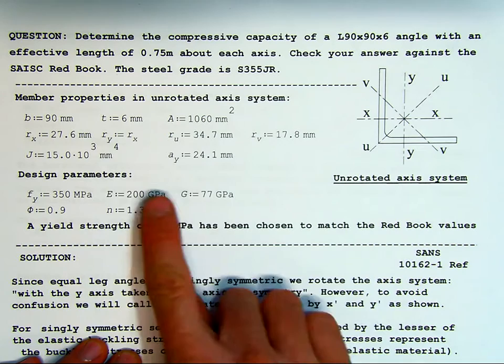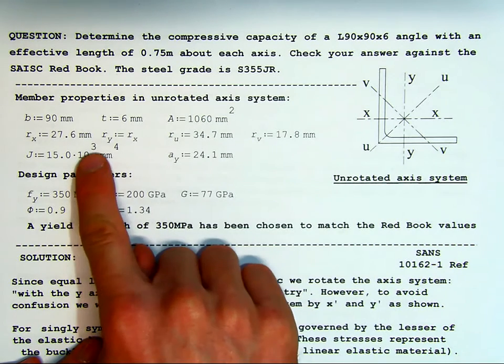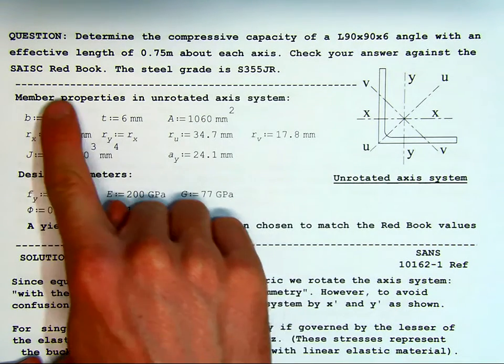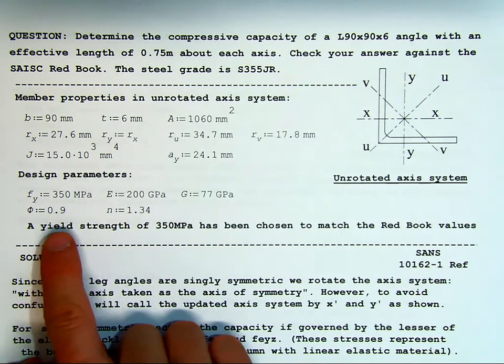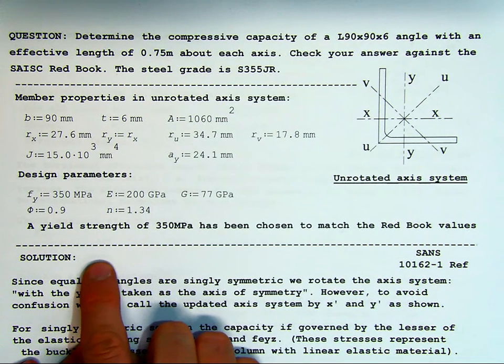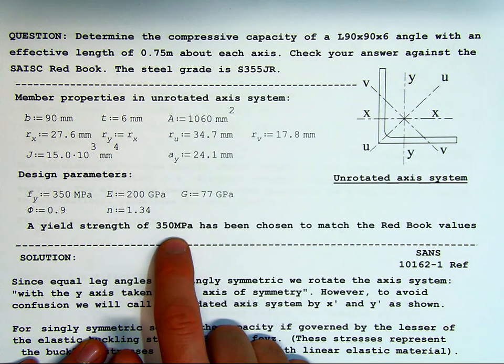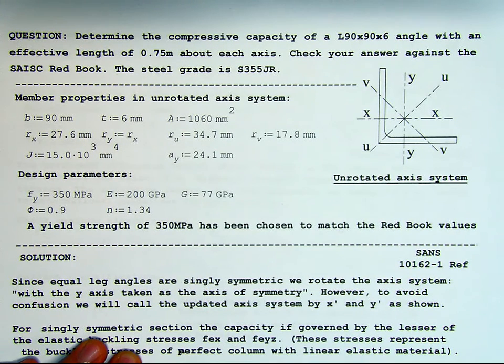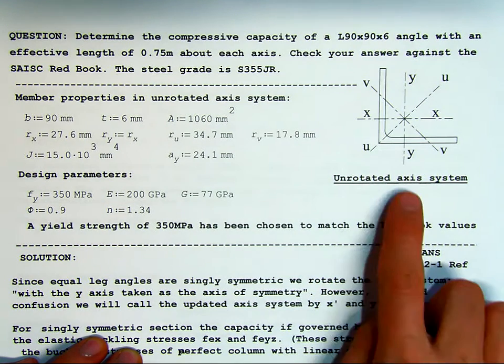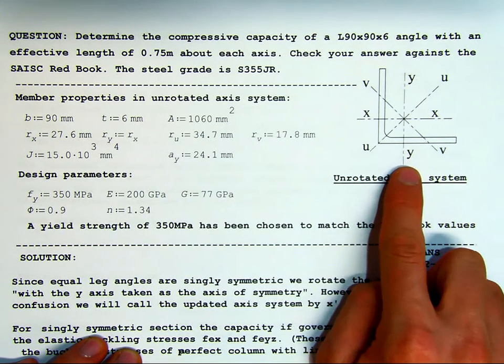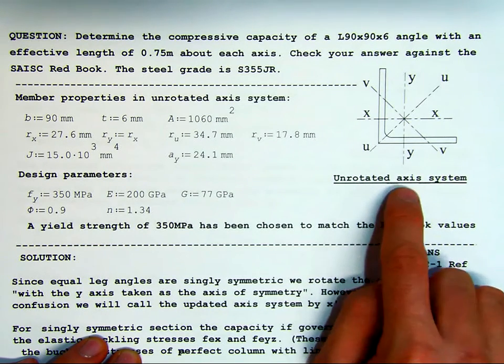The steel grade is S355JR. And then here are the properties from the Redbook, the SAISC Redbook, and here's the design parameters. Just as a matter of interest, I'm going to use a yield strength of 350 MPa. This is simply because the Redbook is based upon a 350 MPa strength, just so we come to the same answers.